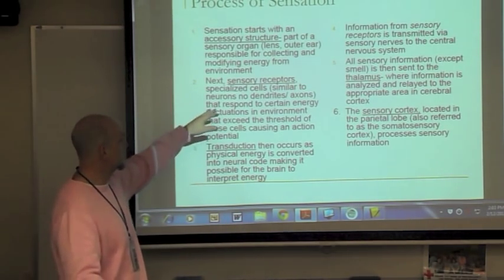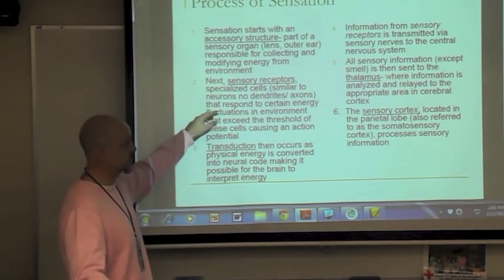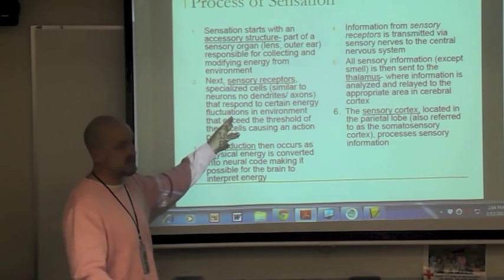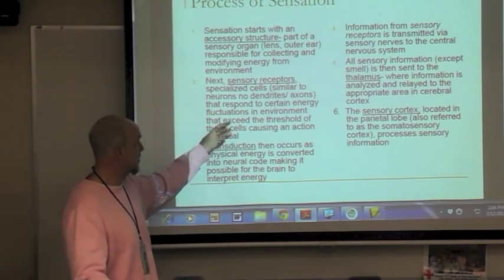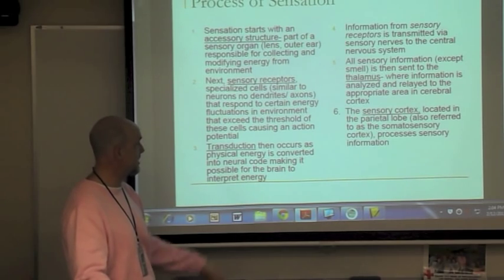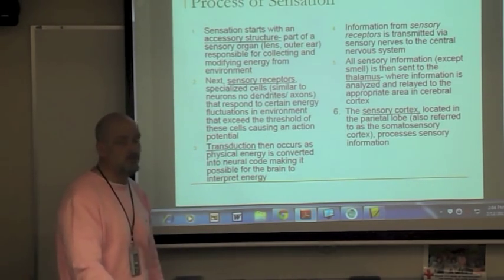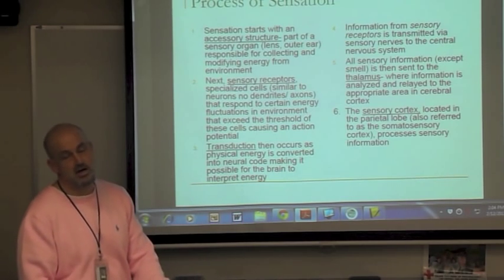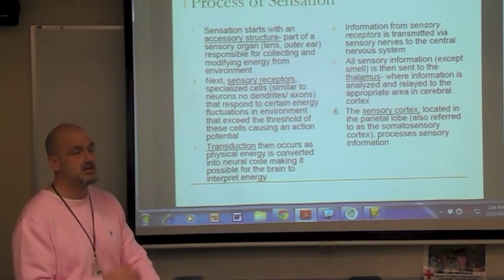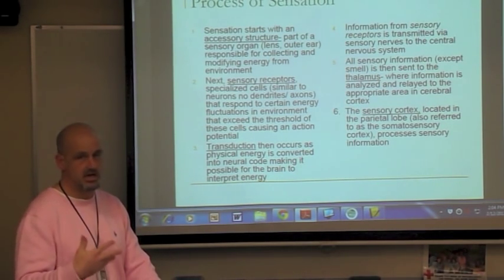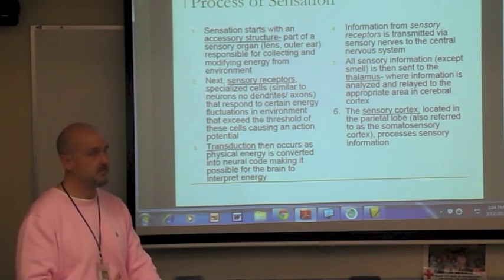From there, sensory receptors — specialized cells similar to neurons but without dendrites or axons — respond to certain energy fluctuations in the environment that exceed the threshold. Eventually this causes an action potential. When something from the environment is strong enough to exceed the threshold, it starts the chain of energy release needed to detect that energy.